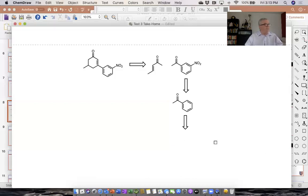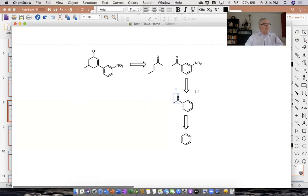So there we go. We can make this from benzene. And the only other reagents we needed had two carbons or less. We needed to put this on using acetyl chloride and a Lewis acid catalyst. And then we can put the NO2 group on quite easily.